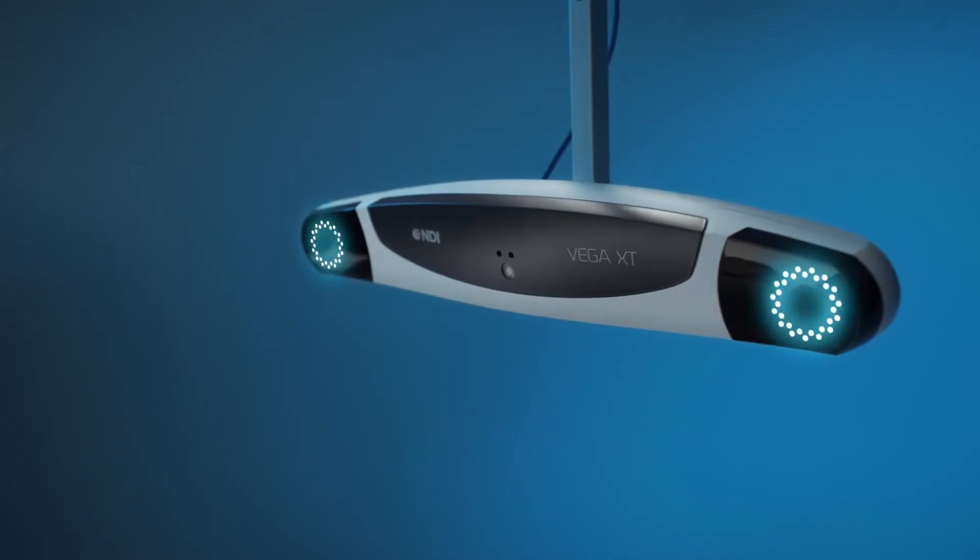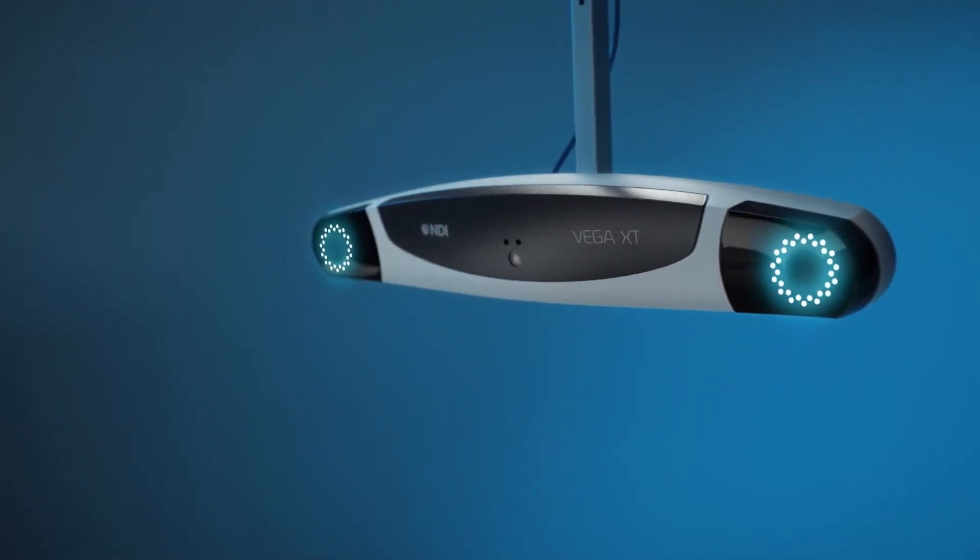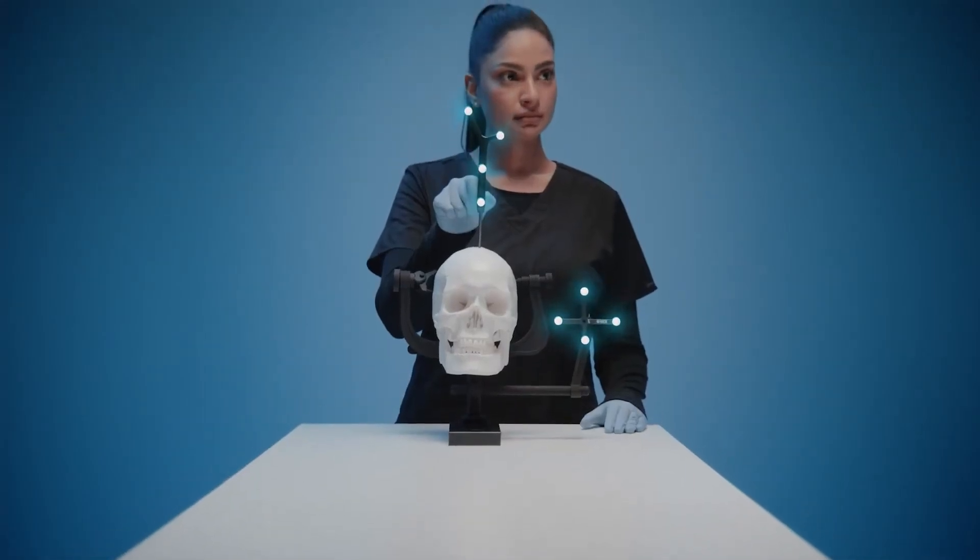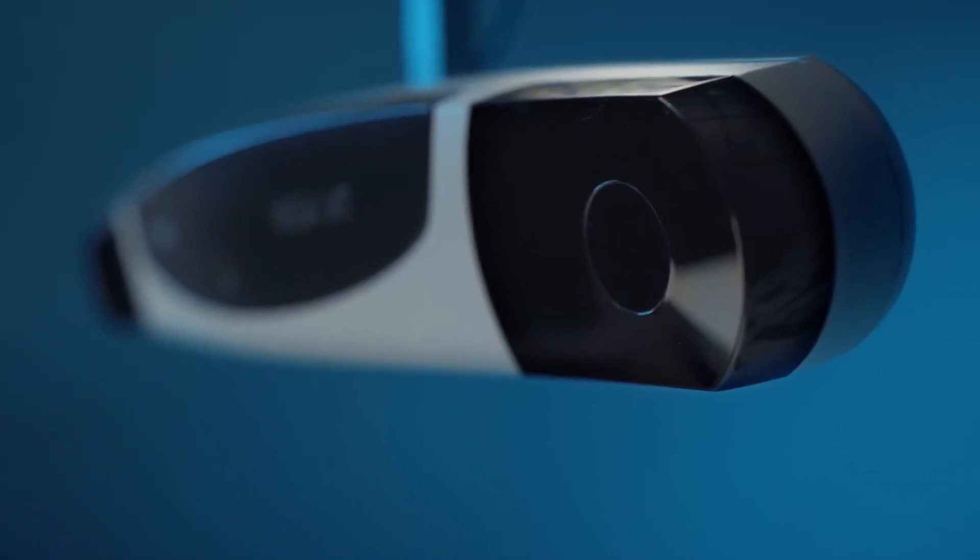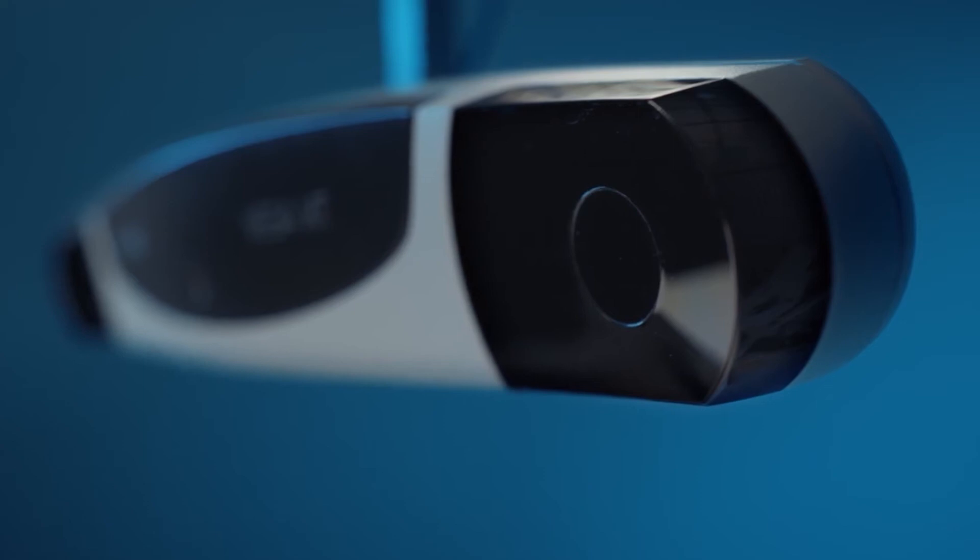A tracking unit floods the surgical site with infrared light. The marker spheres reflect the light back to sensors on the tracking unit, determining the position and location of the surgical instrument.